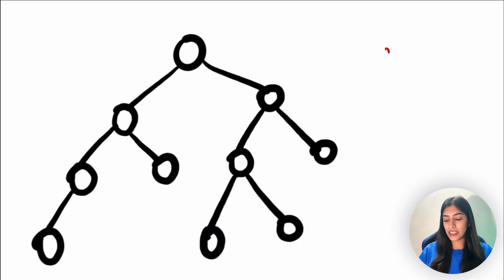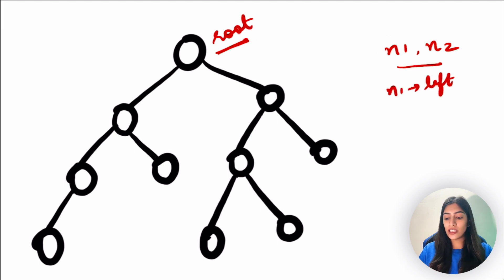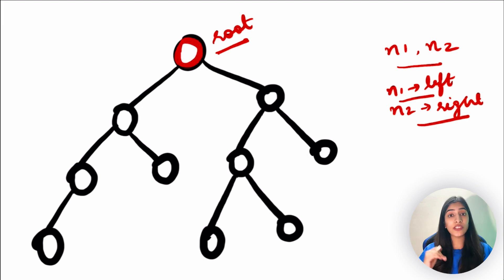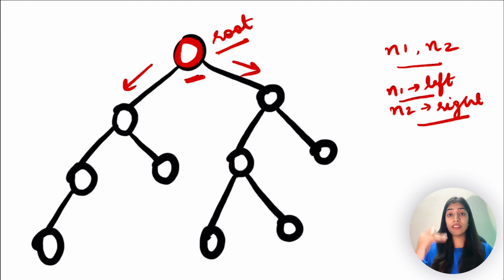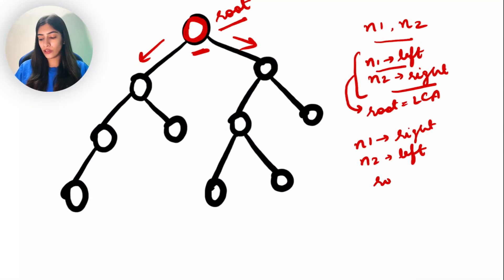Let's talk about the various cases. Suppose we have two nodes N1 and N2. We start with the root and compare the values to determine which side each node lies on, using BST properties. Case one: if N1 is less than root and N2 is greater than root, then N1 is in the left subtree and N2 is in the right subtree — so the root is the LCA. Similarly, if N1 is greater and N2 is lesser, root is still the LCA.